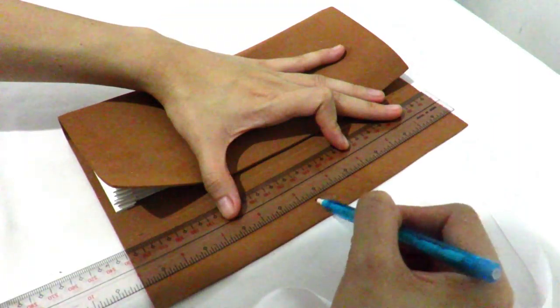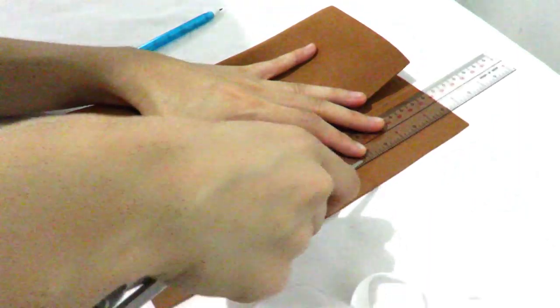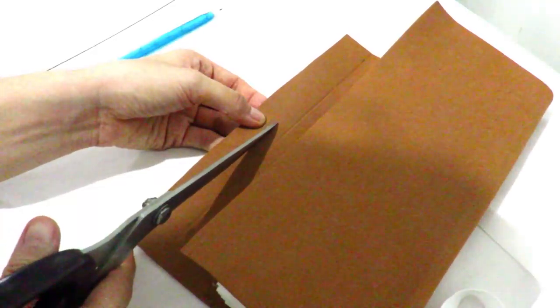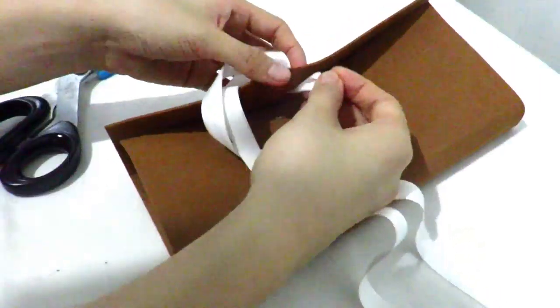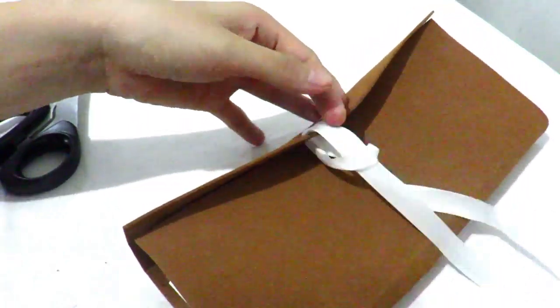Next, trace out the middle part of your flap and score it again with the scissors. This time around, make sure to slice through the felt and make a hole. Insert the ribbon through the hole and loop the ends to secure it in place.